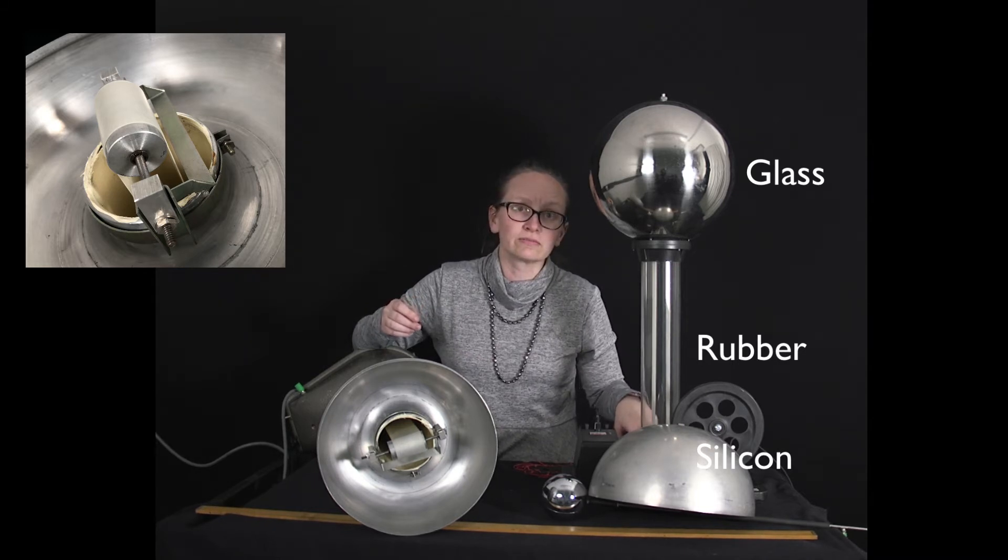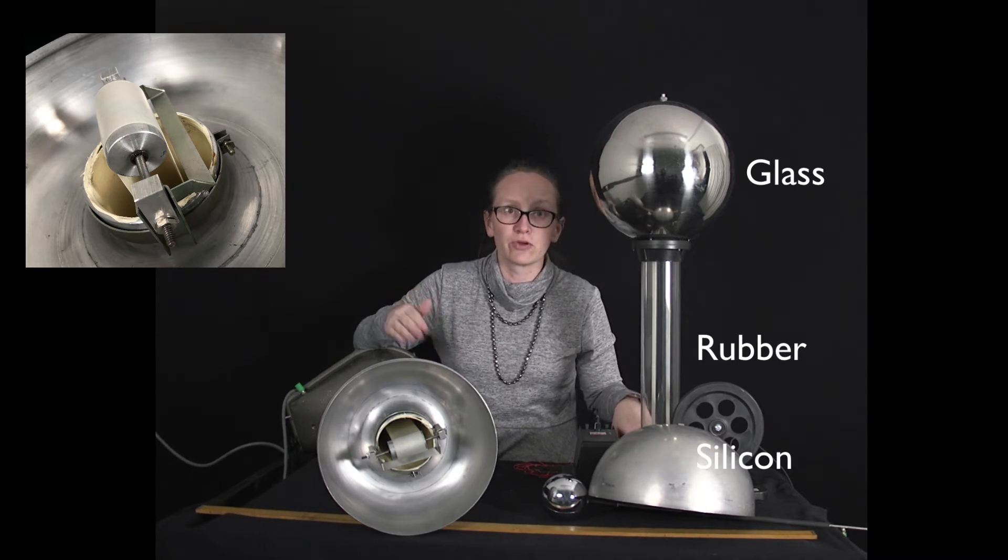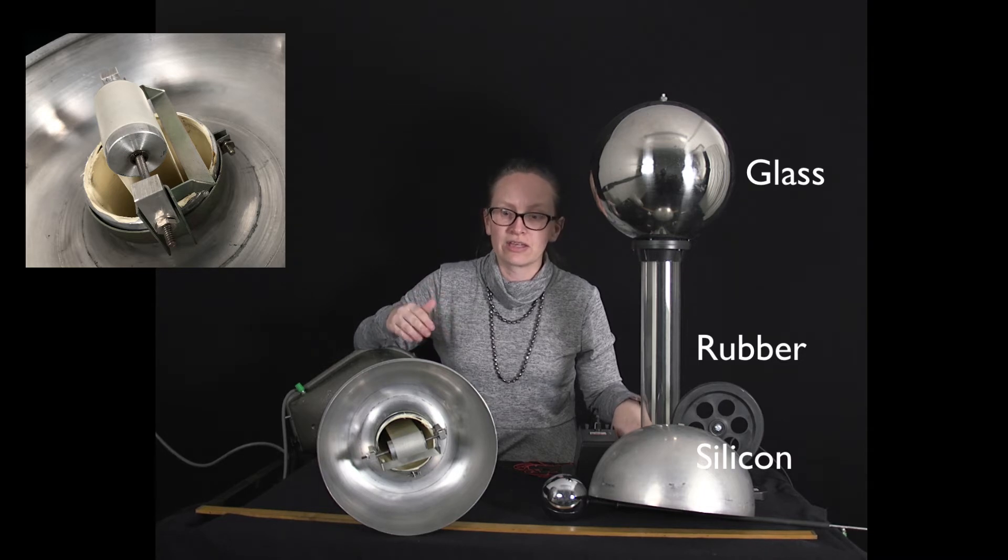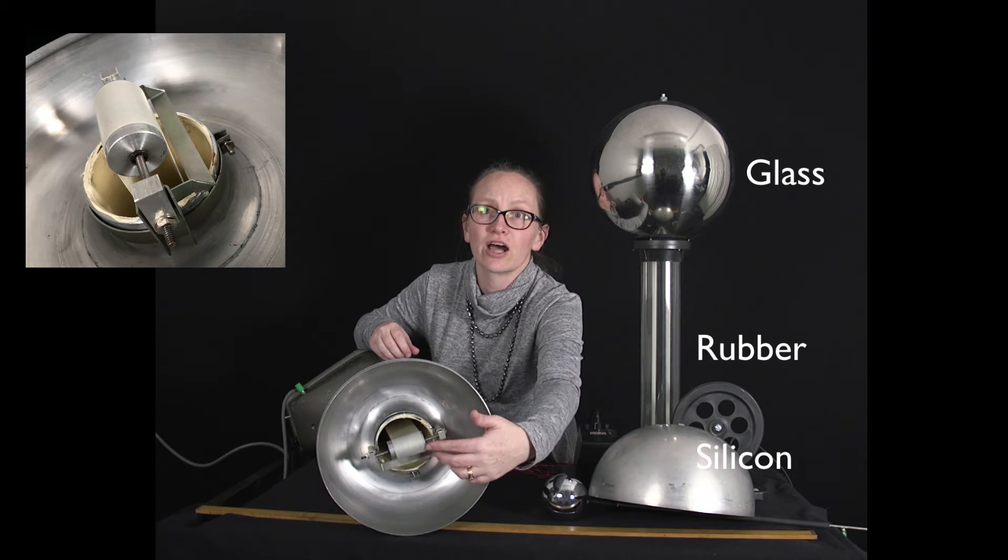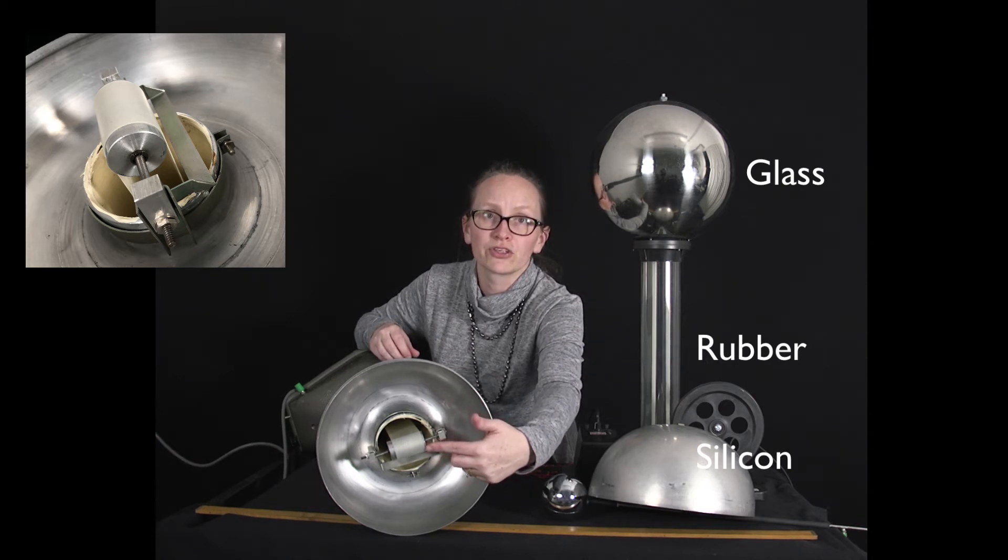The lower roller can then be grounded to remove those electrons. Essentially what we end up with is a very large positive charge on the roller up the top.